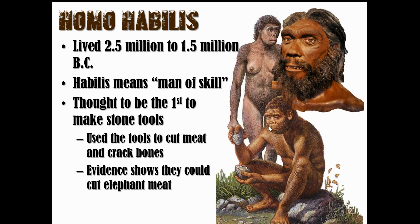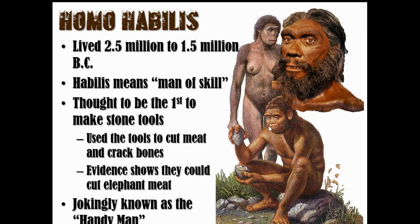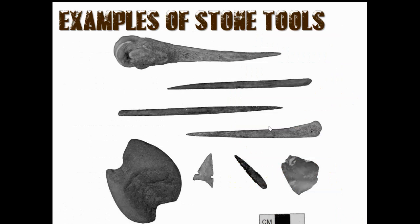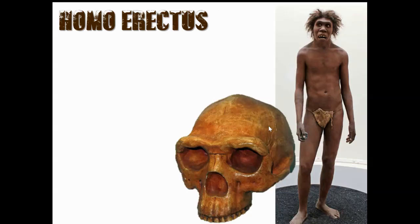They could even cut elephant meat with these stone tools, so they're jokingly known as the 'handyman.' Their tools were just rocks that looked like other rocks — you'd use one rock to hit another and whichever was sharper, that was your sharp rock. There are arrowhead-shaped pieces at the bottom, but they hadn't created arrows yet — those were knives. Basically everything was stone: stone clubs, stone everything.